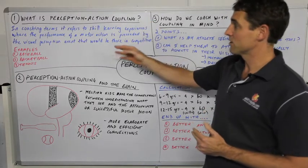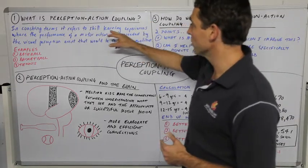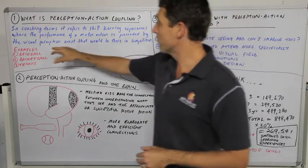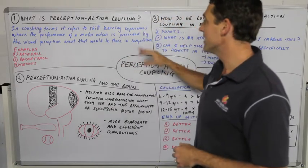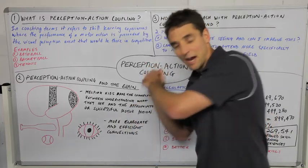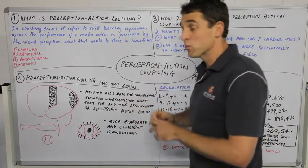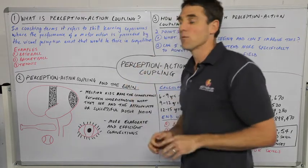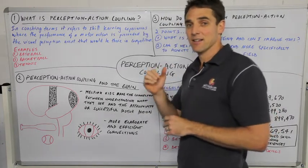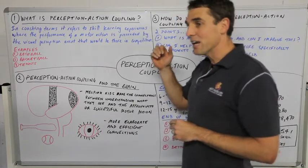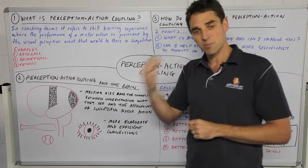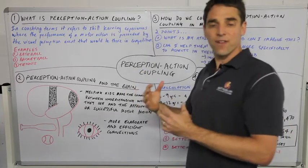So what exactly is it? In coaching terms, it refers to skill learning experiences where the performance of a motor action is preceded by the visual perception event that would be there in competition. So we perform a motor action — whether it's a baseball shot — and what matters is what that athlete sees before they actually perform the motor action. Is it the same as what they would see in actual competition? In coaching, we try to replicate the perceptual experience of the athlete as they're trying to improve their motor actions.